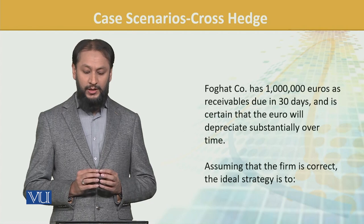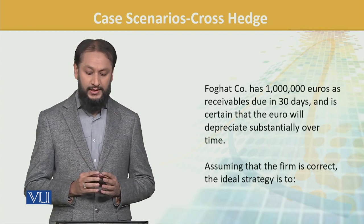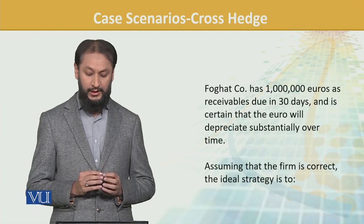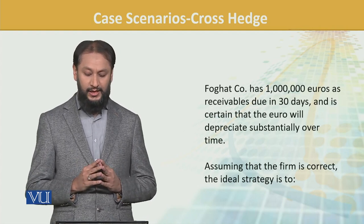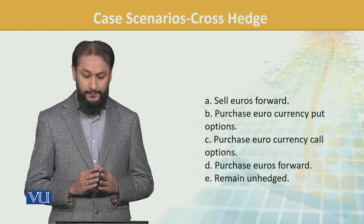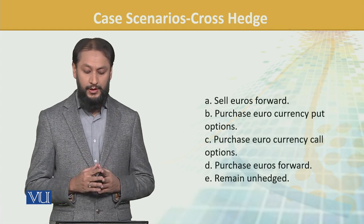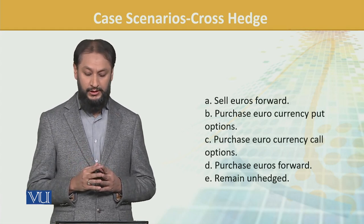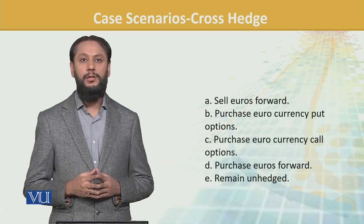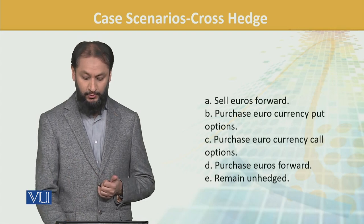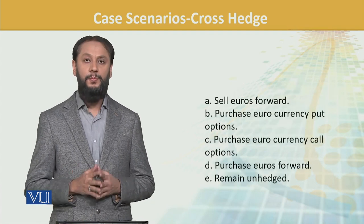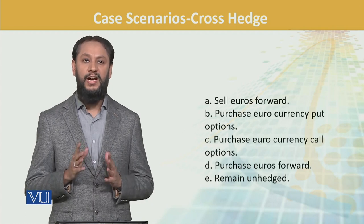Let's look at another case. A company has one million euros as receivable due in 30 days and is certain that the euro will depreciate substantially over that time. They are going to receive this amount but the risk is that the value may change. Assuming the firm is correct, what is the ideal strategy? The options are: sell euro forward, purchase euro currency put option, purchase euro currency call option, purchase euro forwards, or remain unhedged.